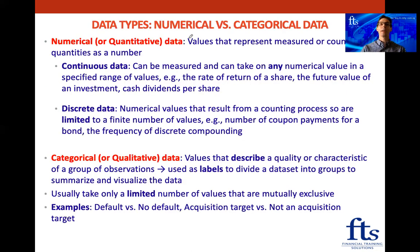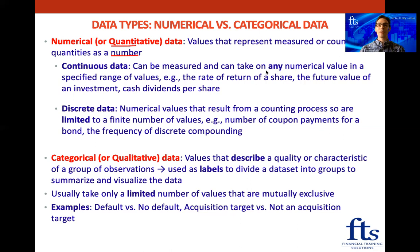The first comparison we're going to do is compare numerical to categorical data. With numerical data, also called quantitative data, these are values that represent measured or counted quantities as a number. Under numerical data, we get continuous or discrete data. With continuous data, these can be measured and can take on any numerical value in a certain range. For example, if we buy a share, we're not sure what the rate of return is going to be.